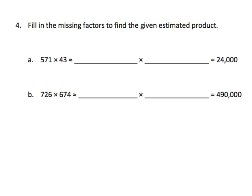Five hundred seventy-one is between five hundred and six hundred. It is closest to six hundred. Forty-three is between forty and fifty. It is closest to forty. And indeed, if we multiply six hundred times four tens, we will end up with our twenty-four thousand. One more example. Let's look at our seven hundred twenty-six. That is between seven hundred and eight hundred. It is closest to seven hundred. We have six hundred seventy-four. That is between six hundred and seven hundred. So that rounds to seven hundred because it is closer to seven hundred. Seven times seven is forty-nine. One hundred times one hundred is ten thousand. Forty-nine times ten thousand is four hundred ninety thousand.